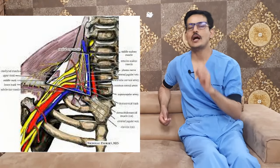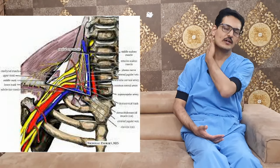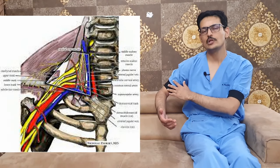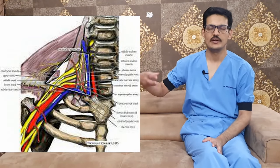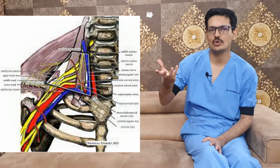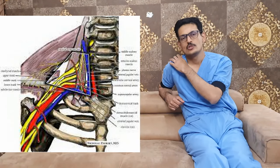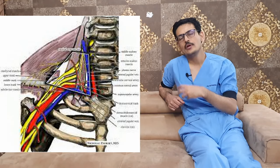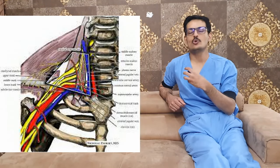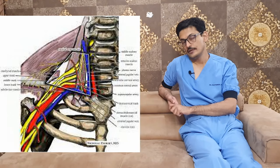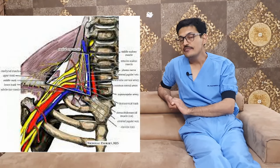A very important cause is thoracic outlet syndrome. Nerves arise from the neck and pass through the thoracic outlet as the brachial plexus, and any compression in the thoracic outlet can cause numbness in the hand. This is most commonly due to a cervical rib, but can also be caused by soft tissue compression from fibrotic bands or the scalenus anticus muscle. A detailed video on thoracic outlet syndrome is available for further information.